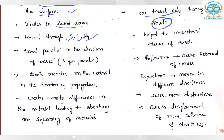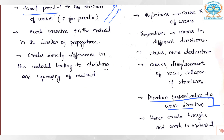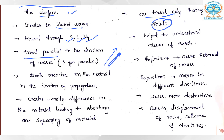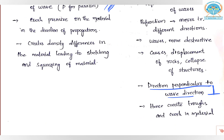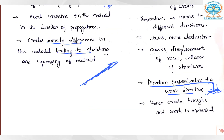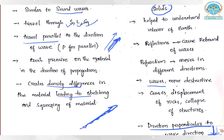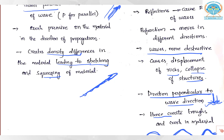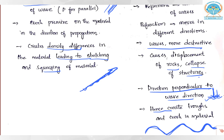P waves travel parallel to the direction of the wave, exerting pressure in that same direction. S waves travel perpendicular to the wave direction. P waves create density differences by stretching and squeezing in the same direction. S waves create crests and troughs — this makes S waves much more destructive than P waves, causing displacement of rocks and even collapse of structures, while P waves cause mainly stretching and squeezing along the fault.